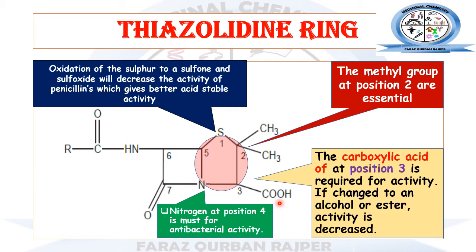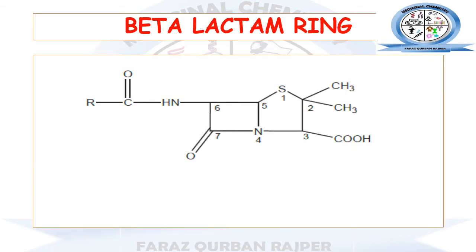At the fourth position, we have the ring fusion region containing the nitrogen. If we consider the beta-lactam and thiazolidine rings separately, both have the nitrogen functional group at this ring fusion region. This is also essential for antibacterial activity, and this site must be left unsubstituted. If we modify this fourth position, antibacterial activity will be decreased.